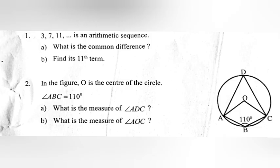Question 2: In the figure, O is the center of the circle. Angle ABC equals 110 degrees. Part A: What is the measure of angle ADC? Part B: What is the measure of angle AOC?